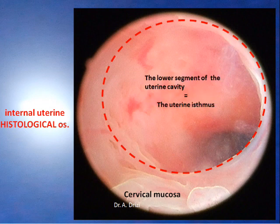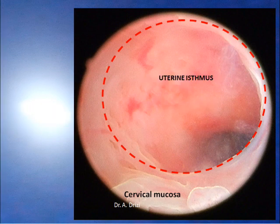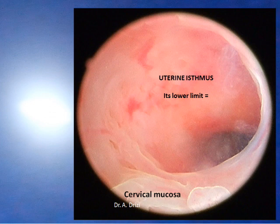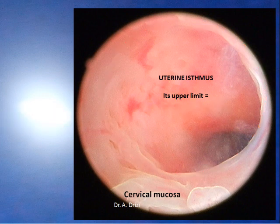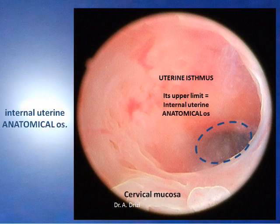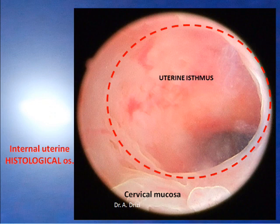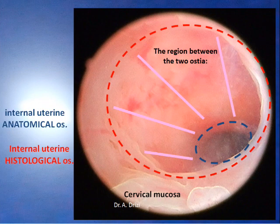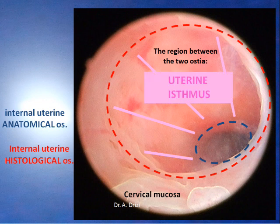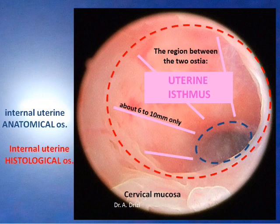The lower segment of the uterine cavity is the uterine isthmus. Its lower limit is the histological ostium, and its upper limit is the internal uterine anatomical ostium. The region that lies between the two is the uterine isthmus — about six to ten millimeters only.